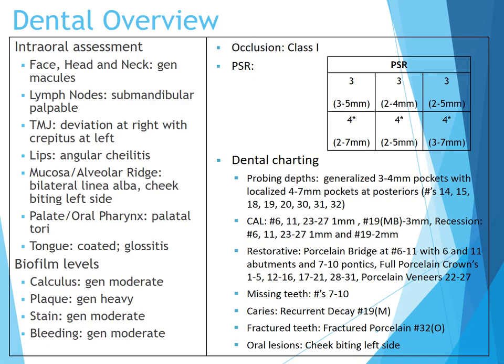The mucosa has a bilateral linea alba with cheek biting present on the left side. He also has palatal tori, and the tongue is coated and presents with glossitis. Biofilm levels: calculus is generalized moderate, plaque is generalized heavy, stain is generalized moderate, and bleeding is generalized moderate. The occlusion is Class I all the way around.